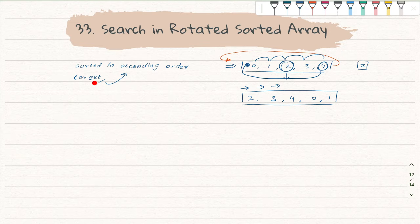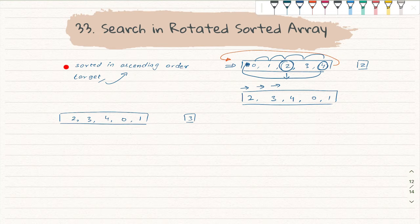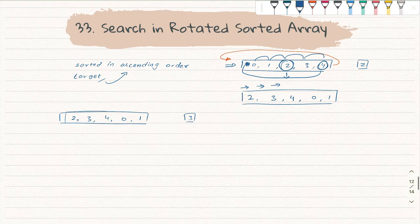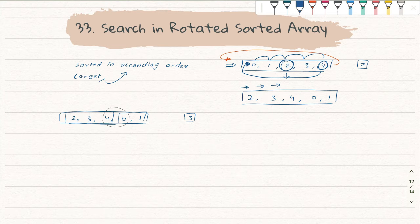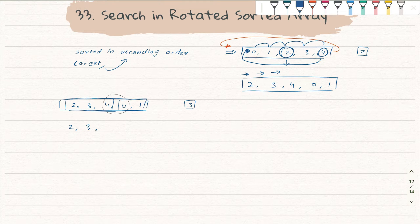Now let's see how we can solve this question. I'll take an example where I have to find 3. I'll pick binary search because they have provided us a sorted array in ascending order and asked us to search the target. I know there is some change where one part of the array is in ascending order and sorted, but another part is not. So how will we handle this situation and what change will we make in the binary search algorithm? I'll take the example: 2, 3, 4, 0, 1.